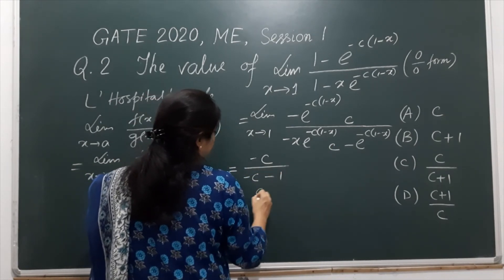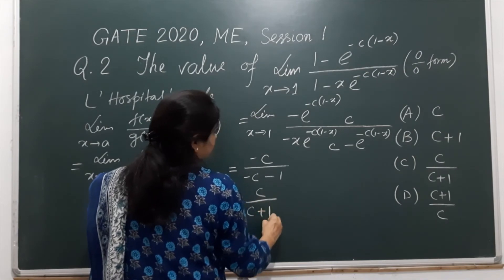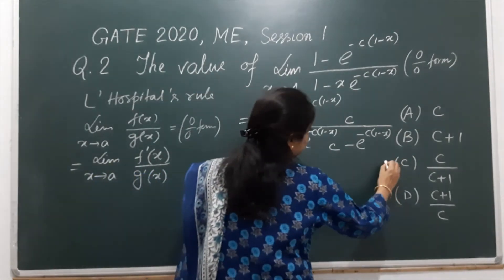So let us take minus common, it is c by c plus 1. Look here, option c is the correct answer.